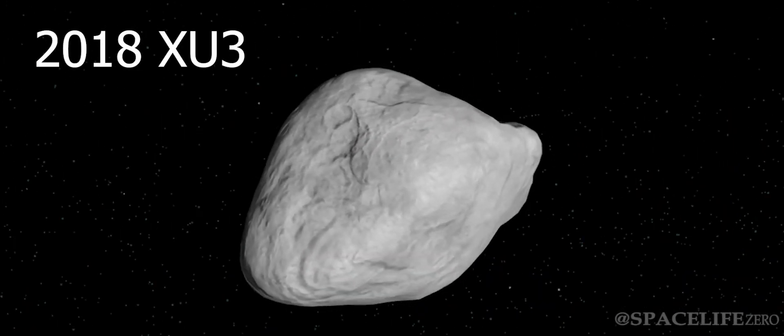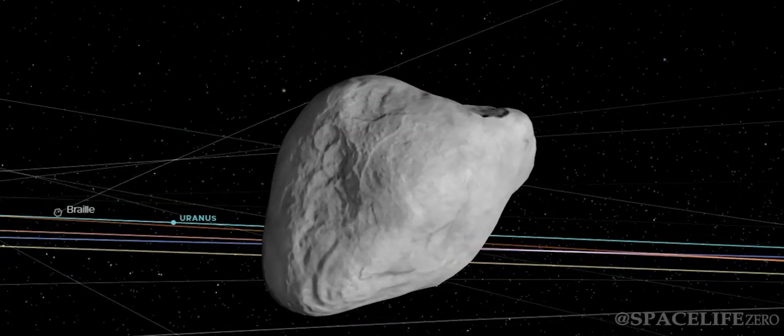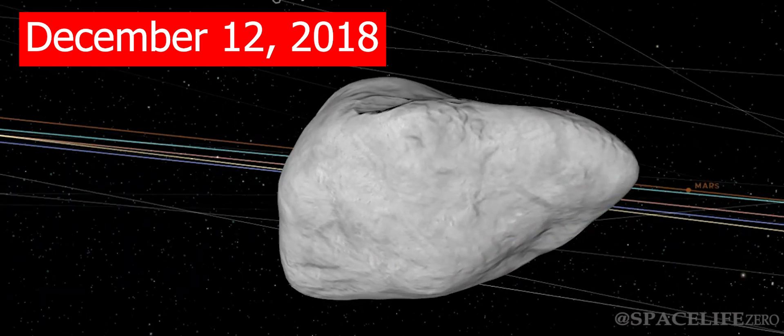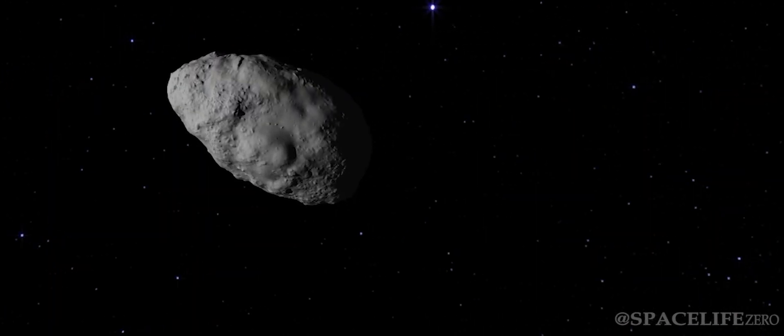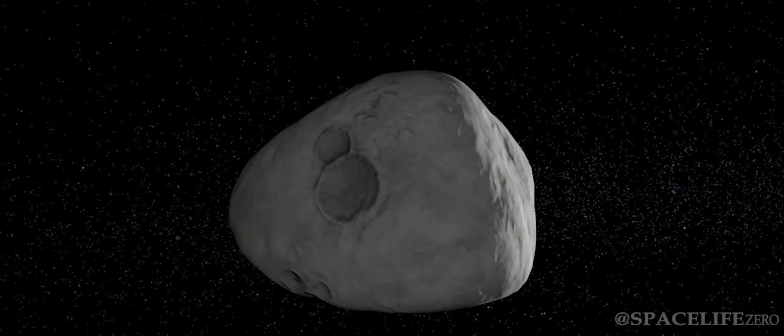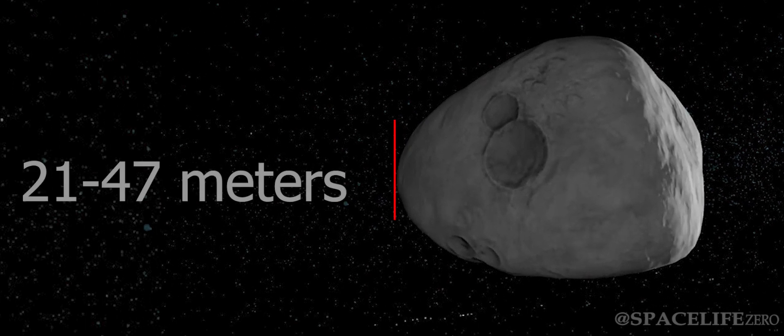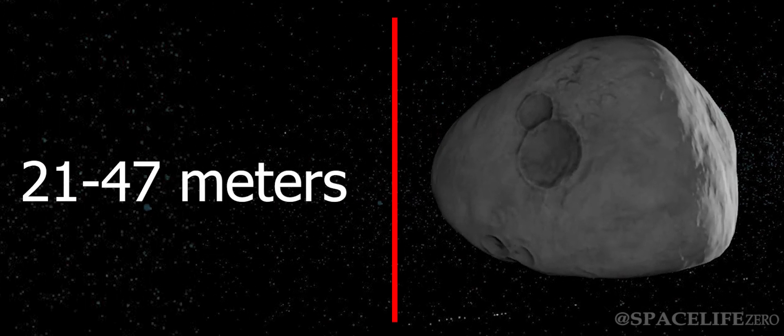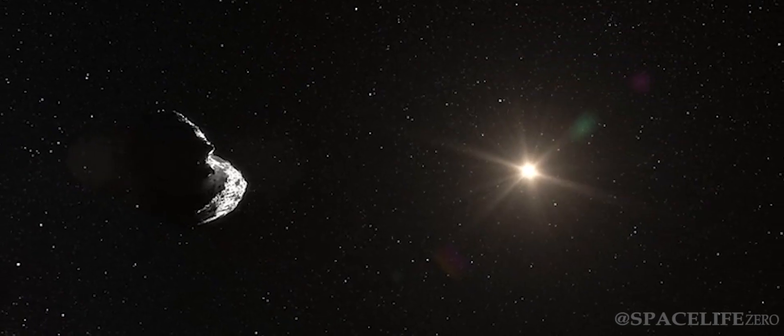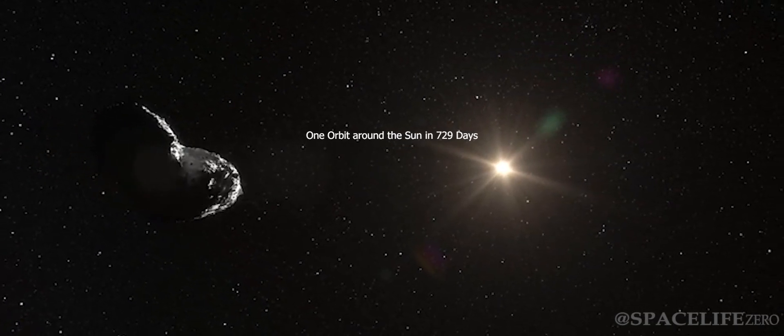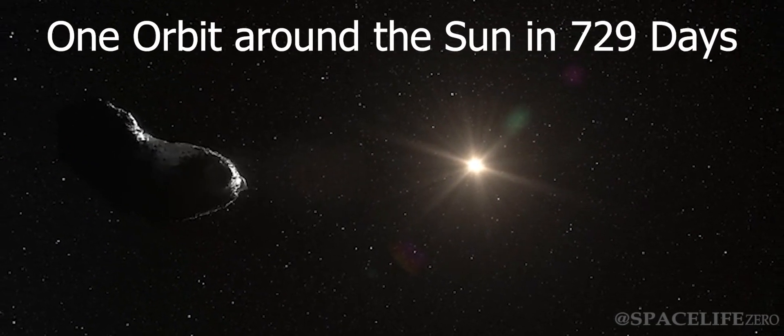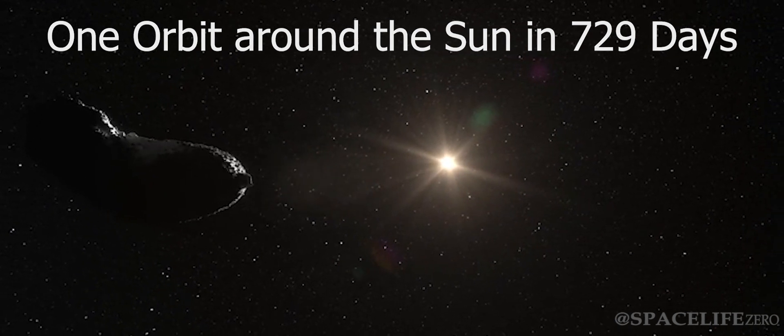Asteroid 2018 XU3 was detected on December 12, 2018, and it belongs to the Apollo Group. Its size is estimated in the range from 21 meters to 47 meters. It takes 729 days for asteroid 2018 XU3 to complete one orbit around the Sun.